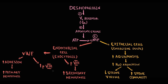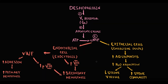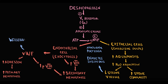Because desmopressin causes decreasing urine volume, this drug is a treatment option in cases of diabetes insipidus and nocturnal polyuria. Because desmopressin increases the amount of von Willebrand factor in the blood, it is a drug of choice in the treatment of von Willebrand disease. Also, because desmopressin causes release of von Willebrand factor and factor VIII, this drug is frequently used in treatment of hemophilia A.